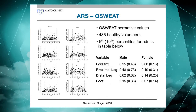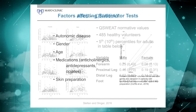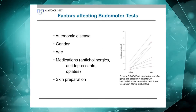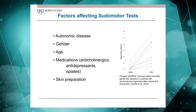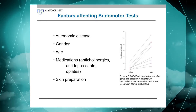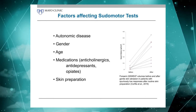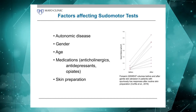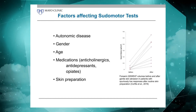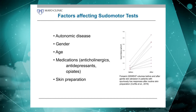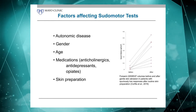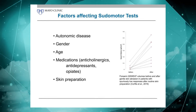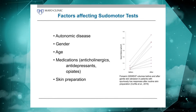So we decided we need normative data specifically for Q-sweat, and we derived those. As I mentioned before, there are factors other than disease that can affect an abnormal sweat response. I mentioned medications already — so this is always something to keep in mind. Age and gender clearly play a role, and then, of course, autonomic disease.